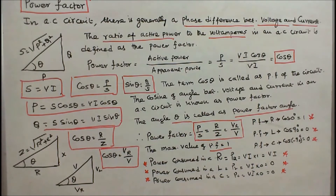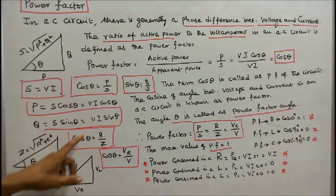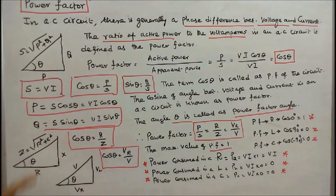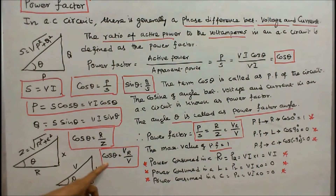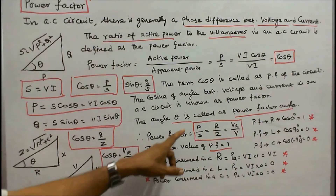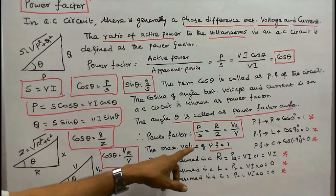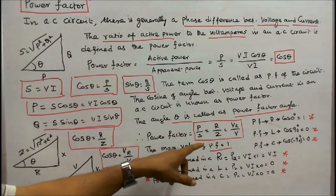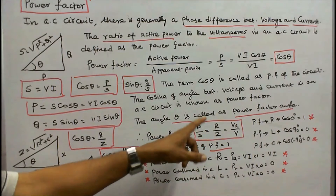In the impedance triangle, R is resistance, X is reactance, and Z is impedance, giving cos theta equal to R divided by Z. In the voltage triangle, VR is the resistive voltage drop, VL is the inductive voltage, and V is the total voltage, giving cos theta equal to VR divided by V. Therefore, power factor equals P divided by S, or R divided by Z, or VR divided by V.